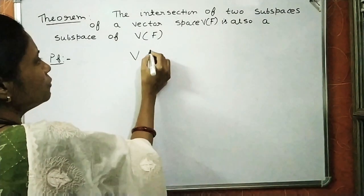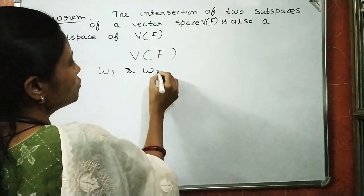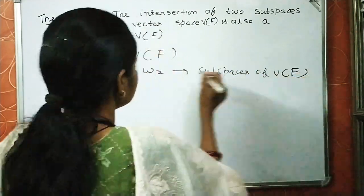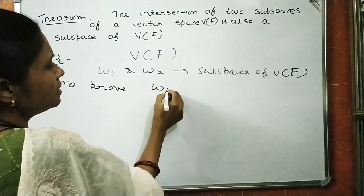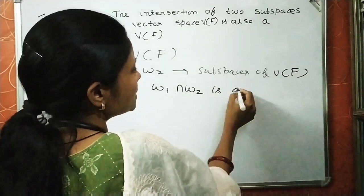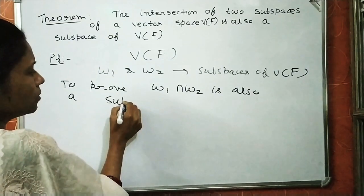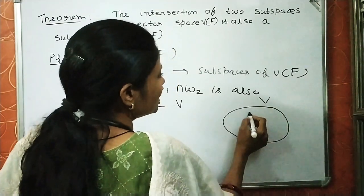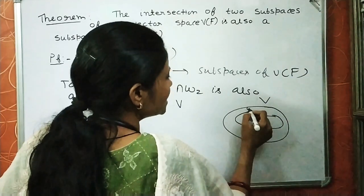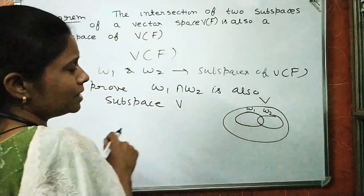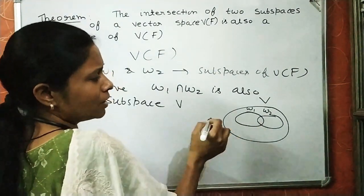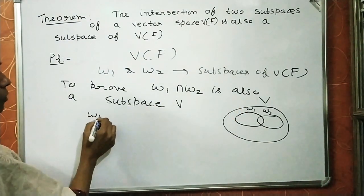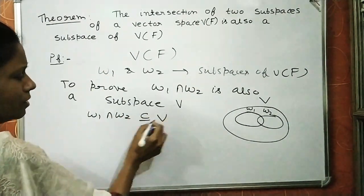We have a vector space VF and its two subspaces W1 and W2, both subspaces of VF. We have to prove that W1 intersection W2 is also a subspace of vector space V. This is our vector space VF with two subspaces W1 and W2. We will see that W1 and W2 cannot be disjoint — they will have a common element, and that is the zero element. To prove W1 intersection W2 is a subspace of V, first we have to show that W1 intersection W2 is a non-empty subset of V.